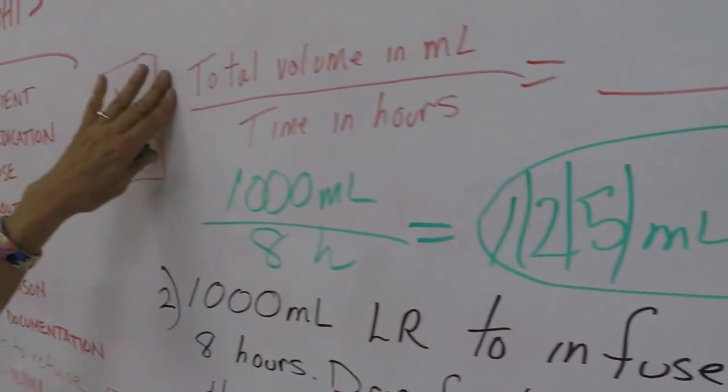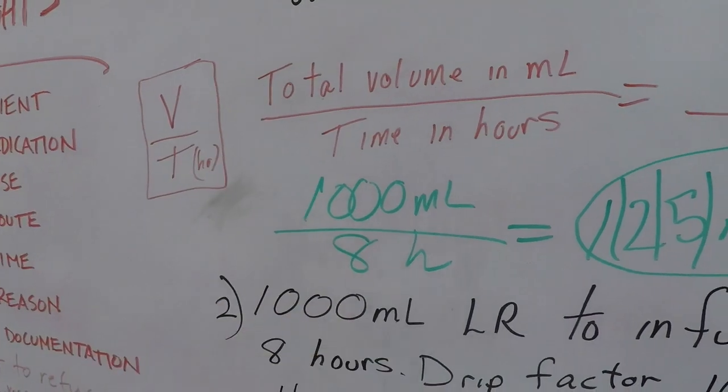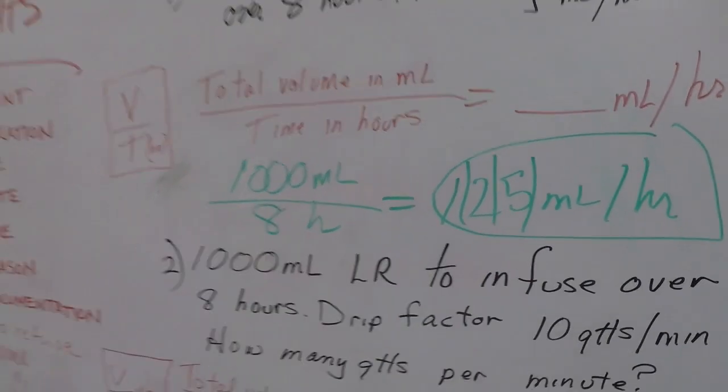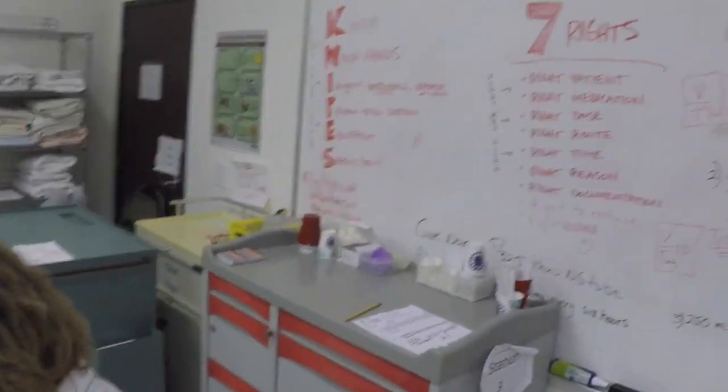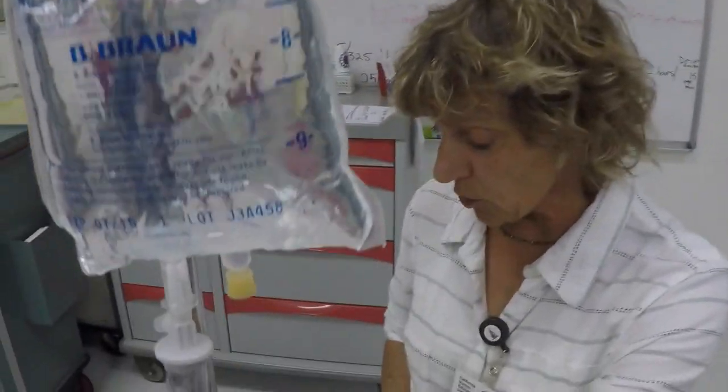Okay, easy stuff. So total volume divided by time in hours equals ml per hour. Let's go back to our IV again and let's look at this drip chamber a little bit closer.